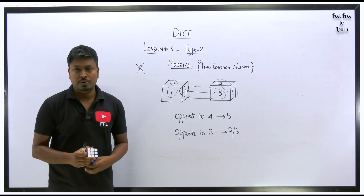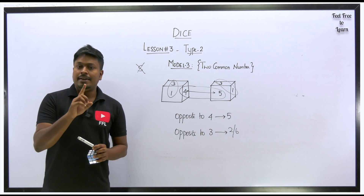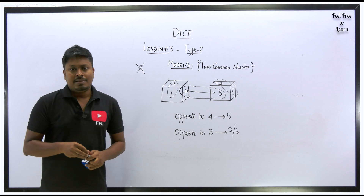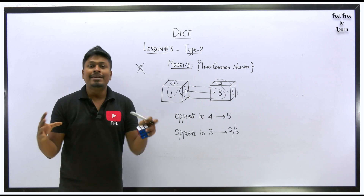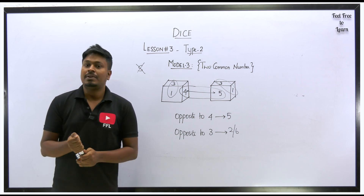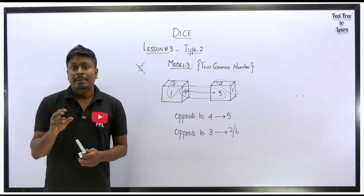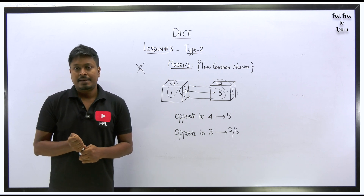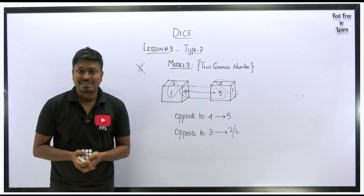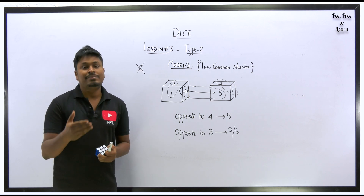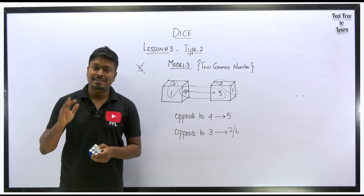That concludes Type 2. The basic concepts and one example from each model have been covered. After learning Types 2, 3, 4, and the complete dice lesson, practice as many questions as possible and you can crack 100% of dice questions — but you must be strong on the basics. Thank you for watching. If you liked this video, share it with friends preparing for competitive exams. Bye.